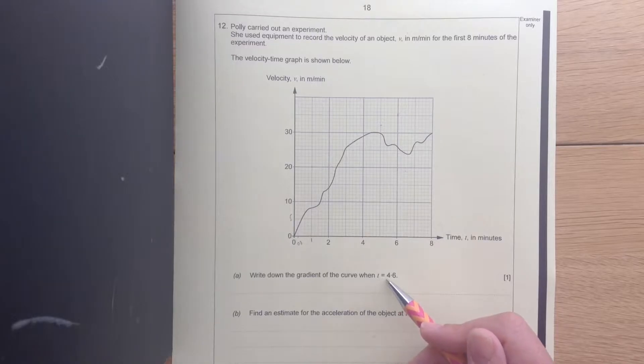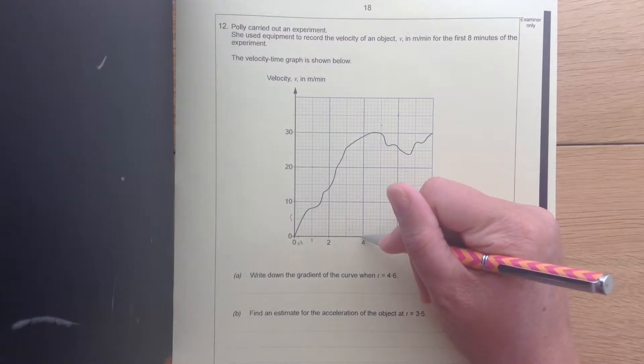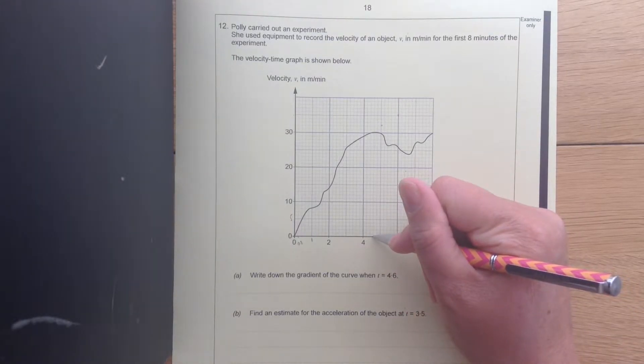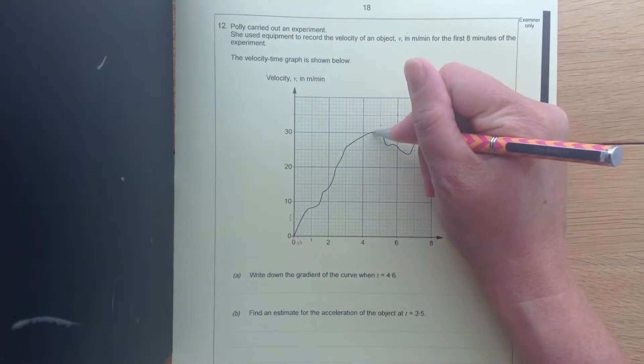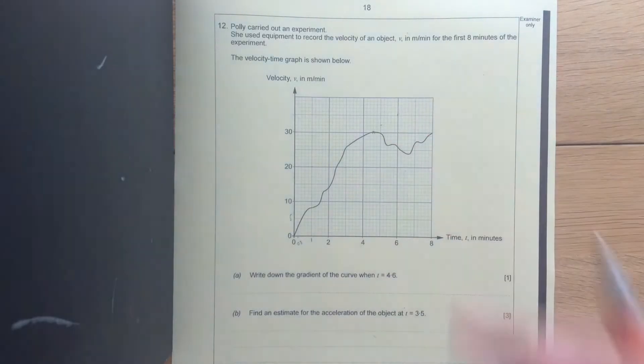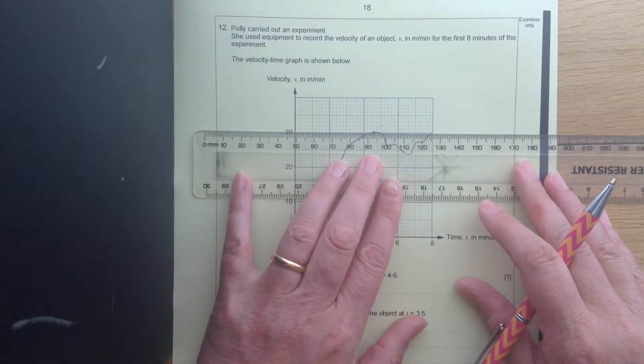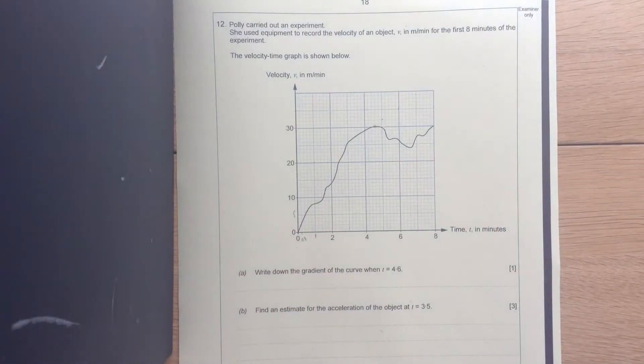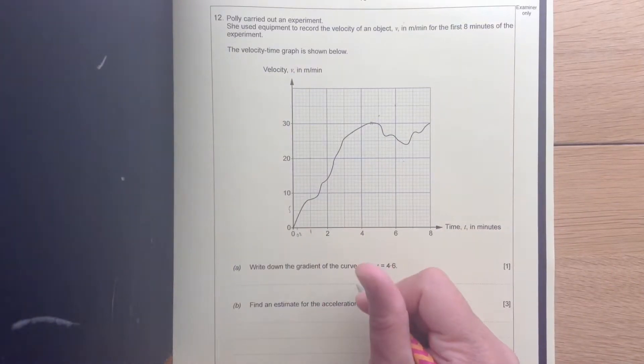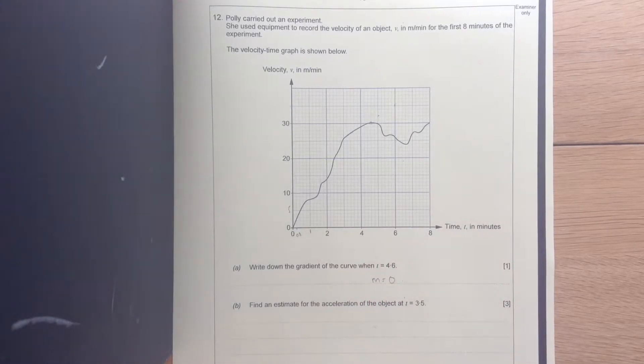Right, and we're looking for t at 4.6. This 4, 4.6. So we're looking here. Okay, here, the gradient would be a straight line. So when it's a straight line, the gradient is 0. So the gradient would equal 0.